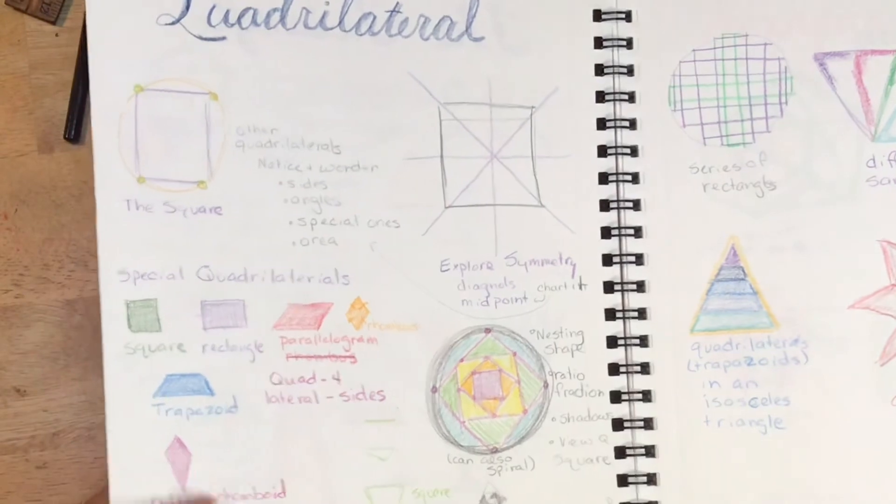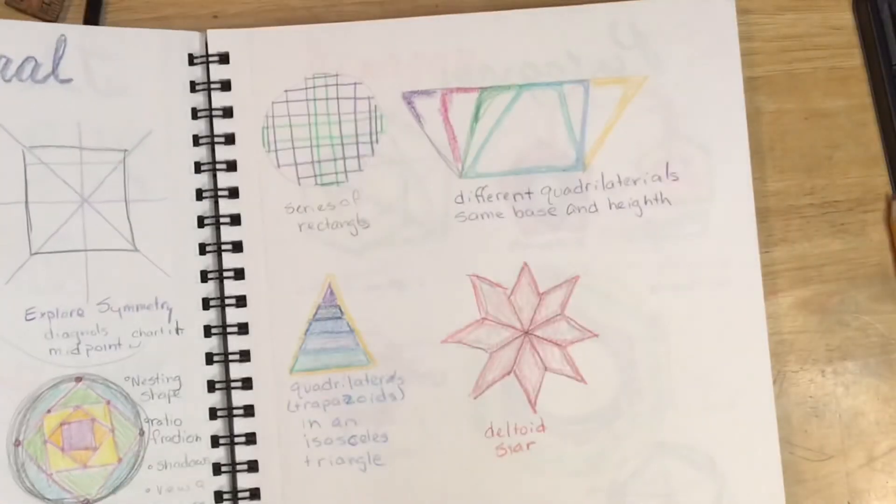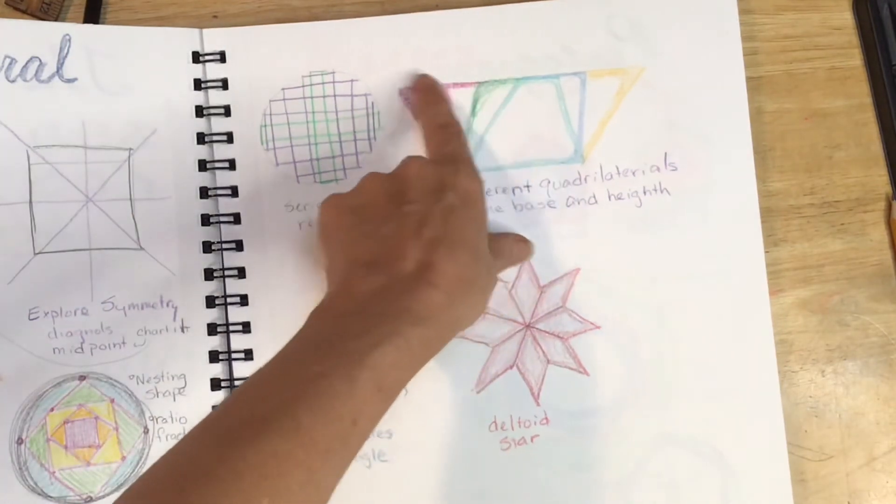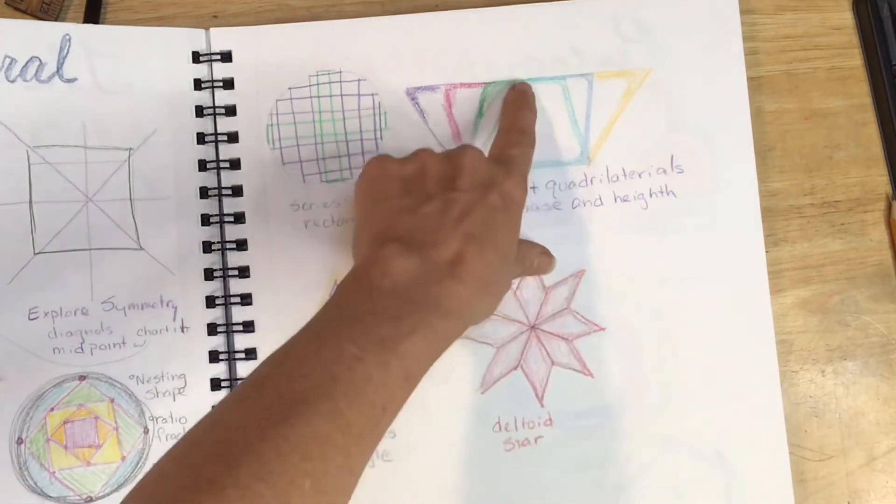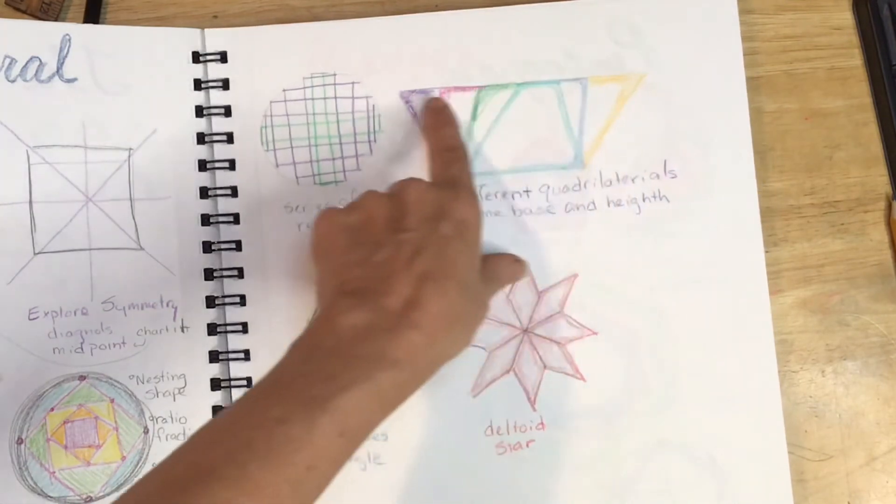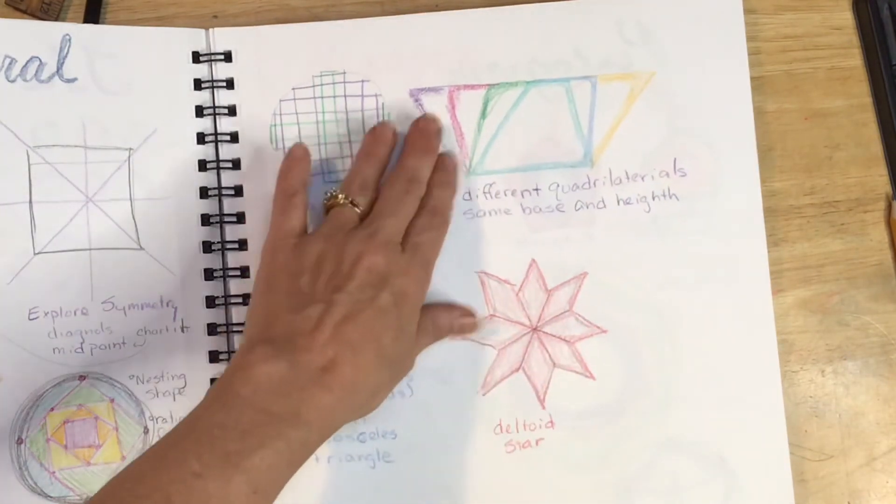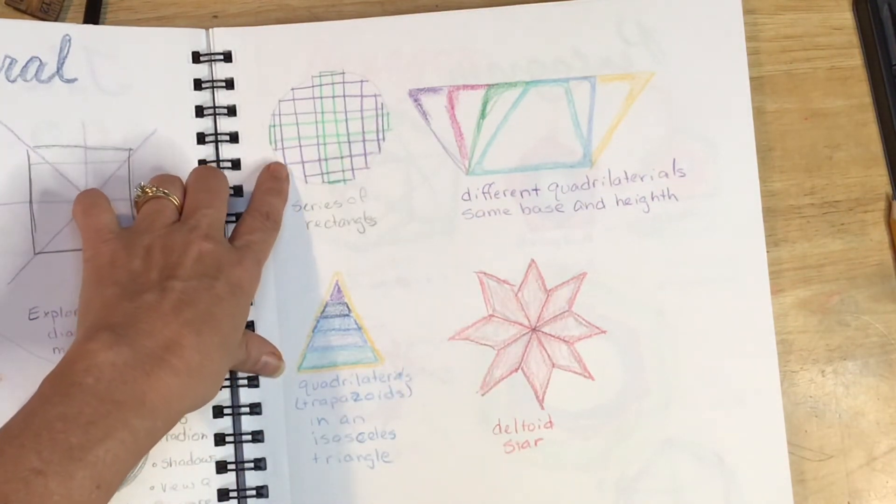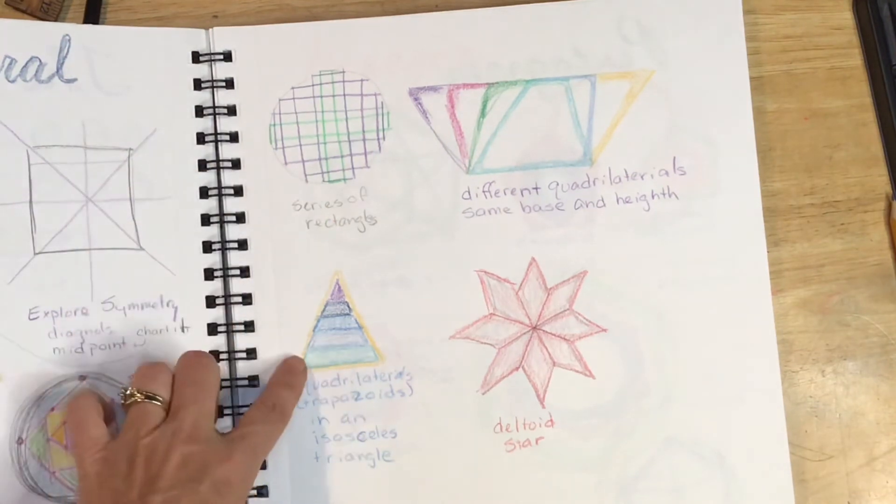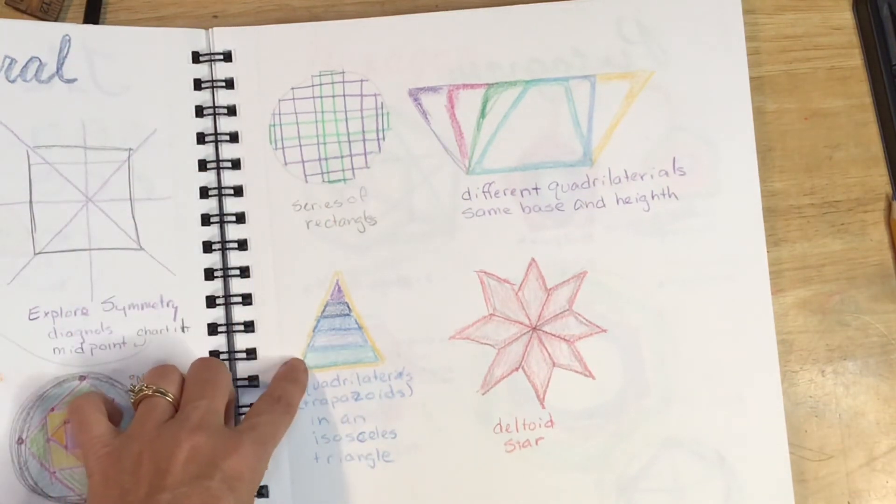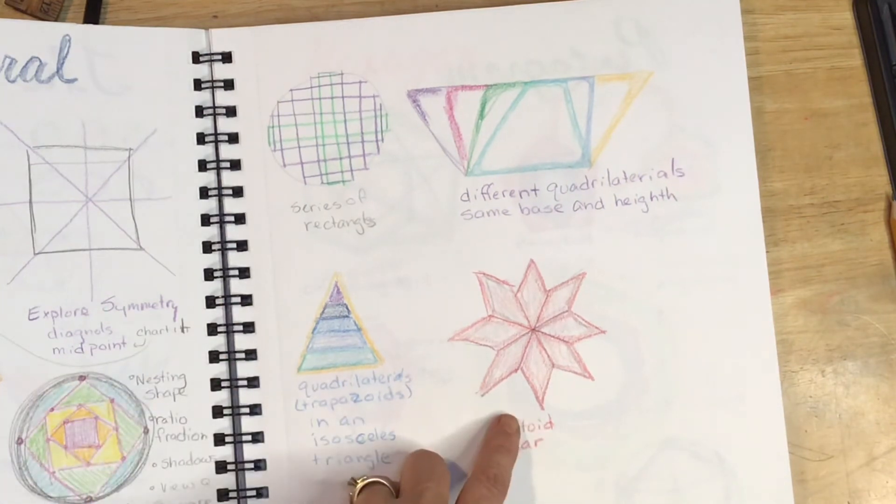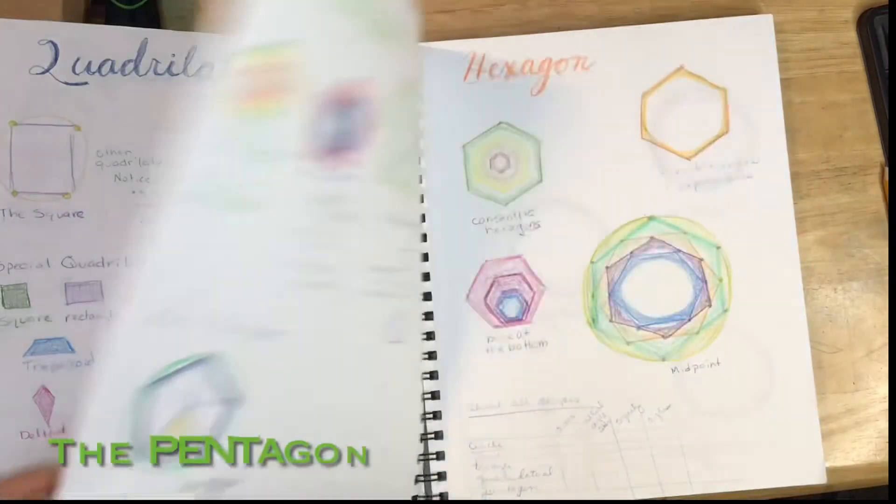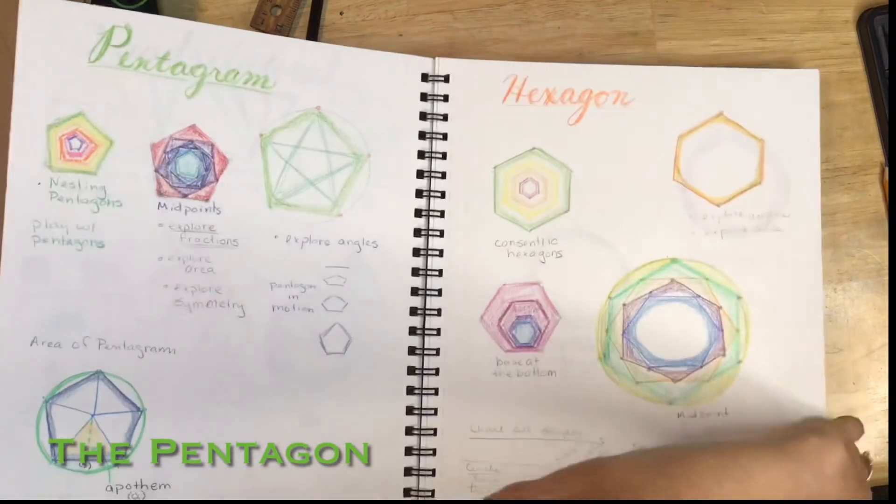So other forms that we plan on drawing after experimenting would be to leave the base the same for the quadrilateral and move the top two vertices in different areas to see what kind of quadrilaterals that we come up with. And then also a series of rectangles inscribed inside a circle and trapezoids inscribed inside a triangle. And we may or may not do this one here, a deltoid star. Then we will move on to the pentagon.